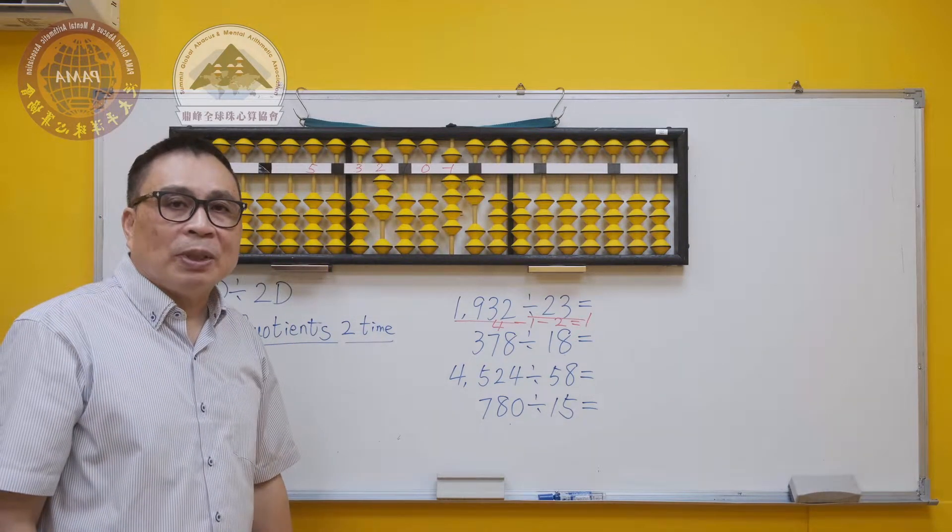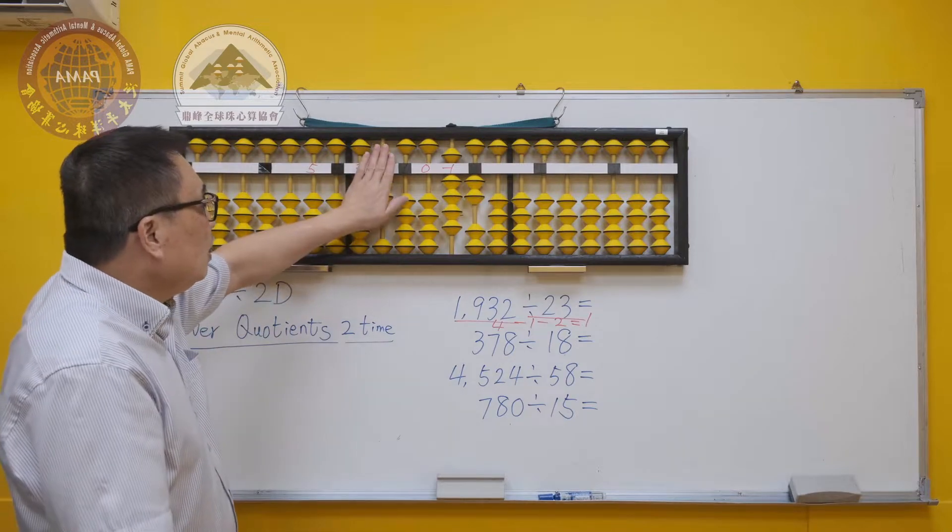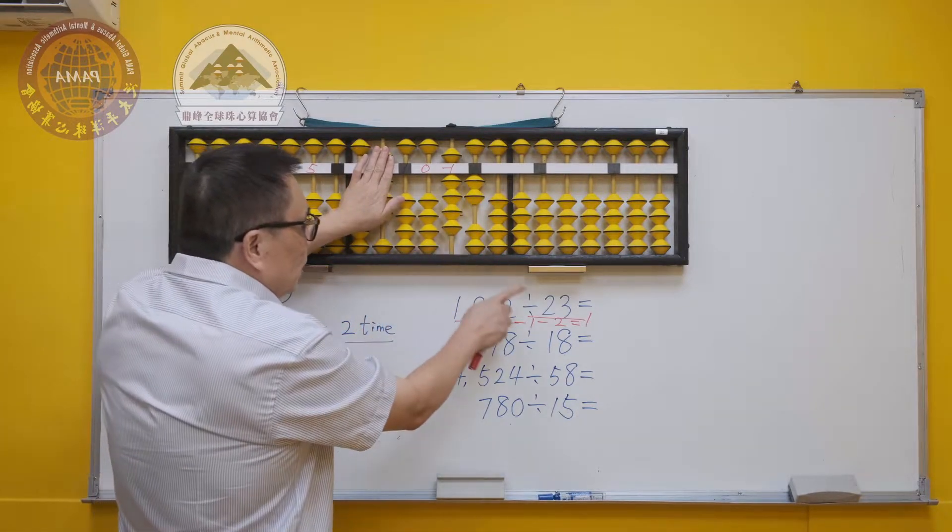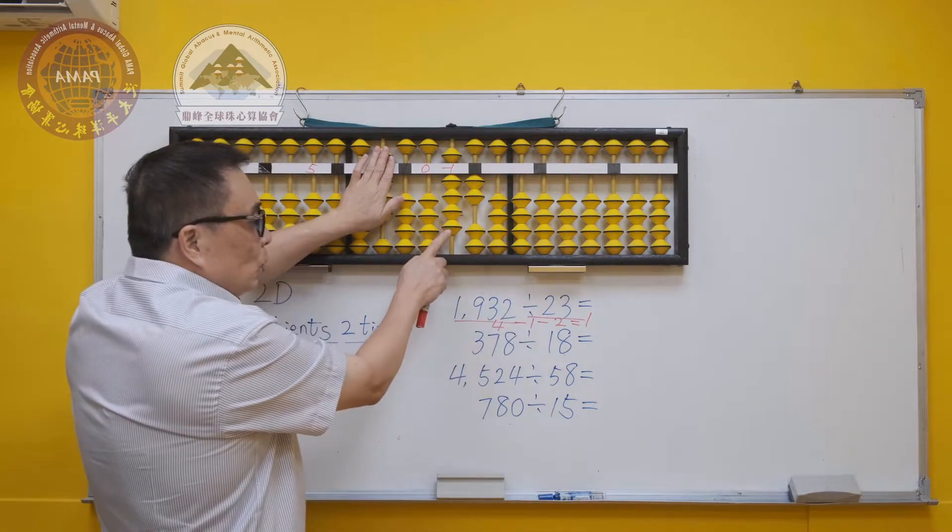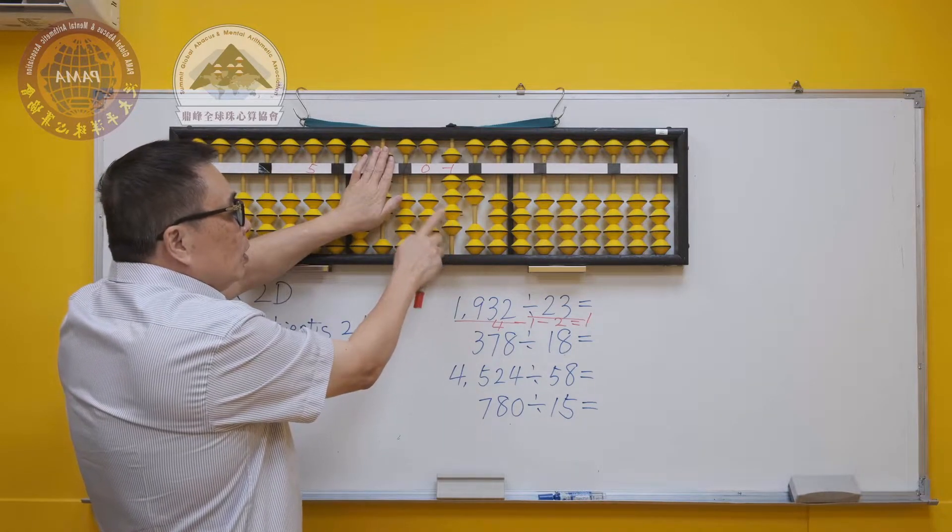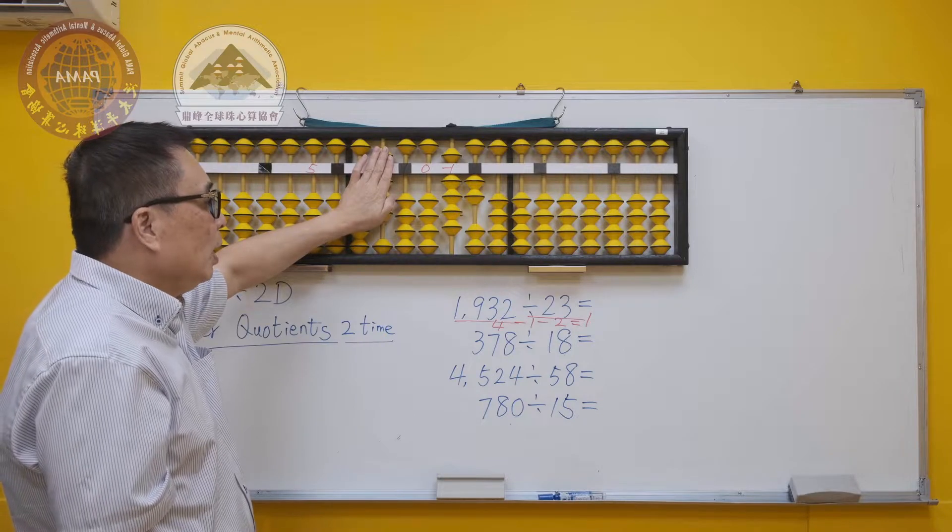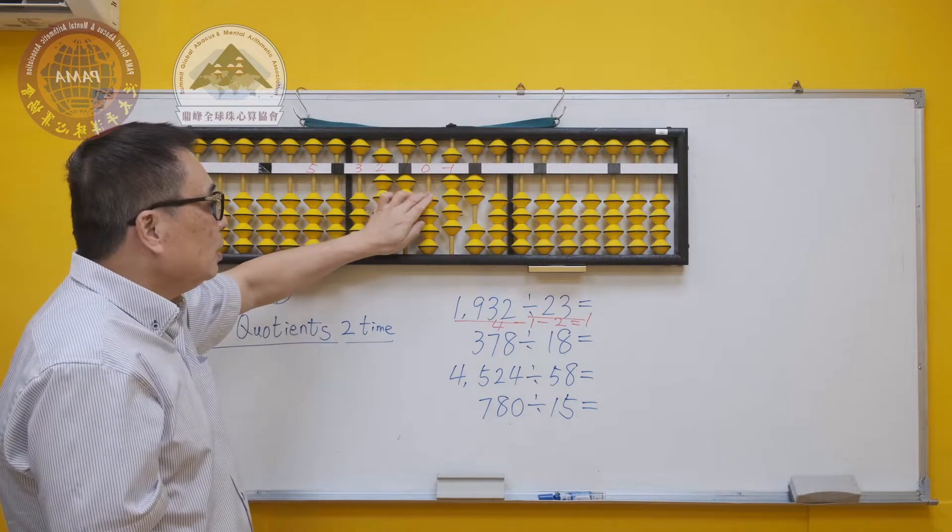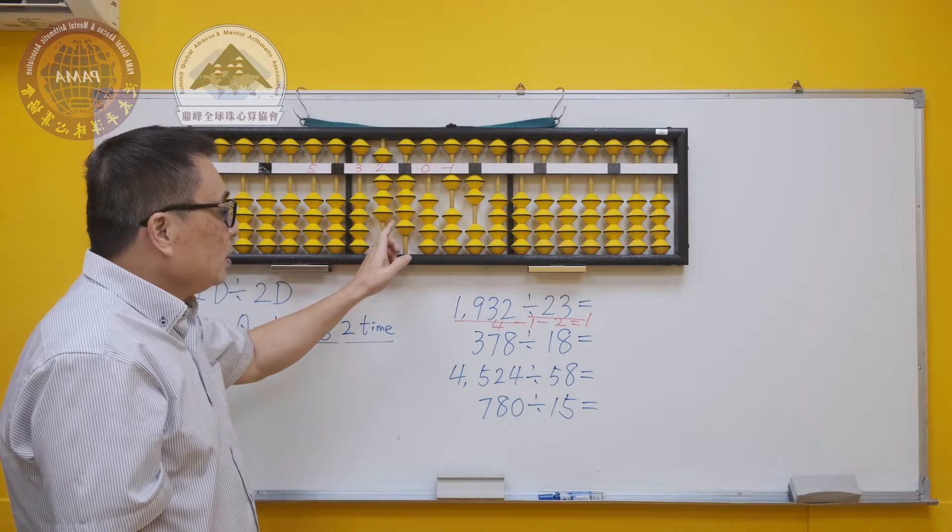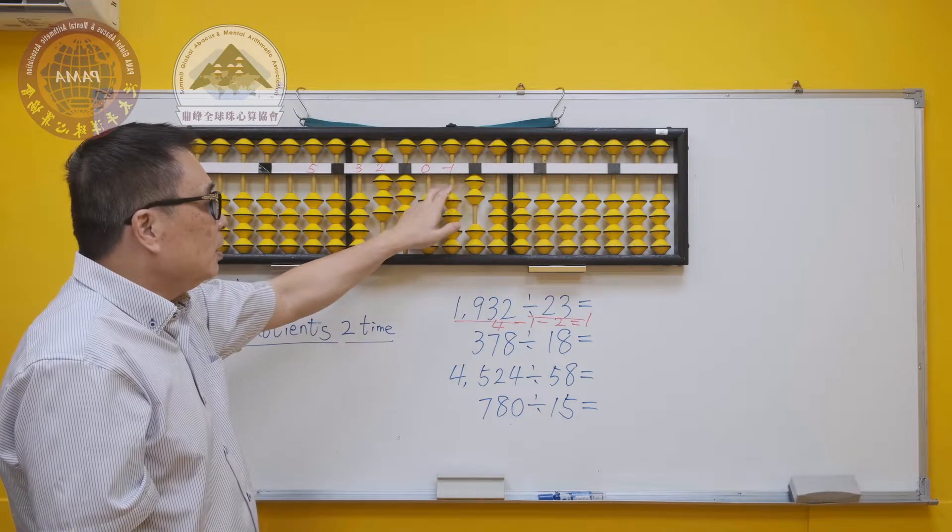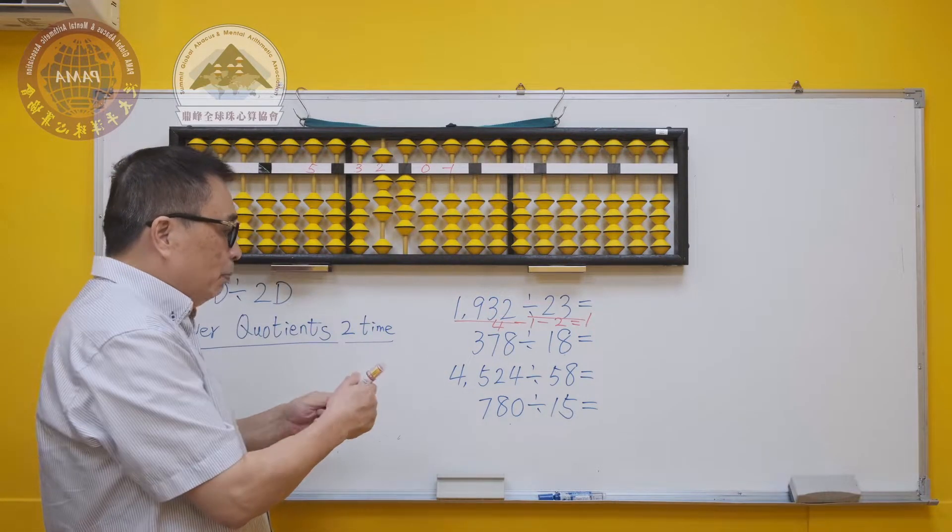Now we will find the second digit of the answer. 9 is bigger than 2. Hence, we will put the answer on the second rod of the left. 2 times 4 is 8. Then 4 times 3 is 12. The final answer is 84.